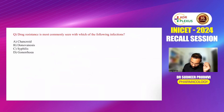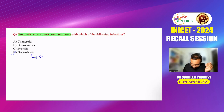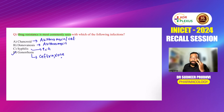Drug resistance is most commonly seen with which infection? The answer is gonorrhoea — previously penicillin was used, now we use ceftriaxone. Drug of choice for chancroid: azithromycin single dose or ceftriaxone. For donovanosis: azithromycin. For syphilis: penicillin G.